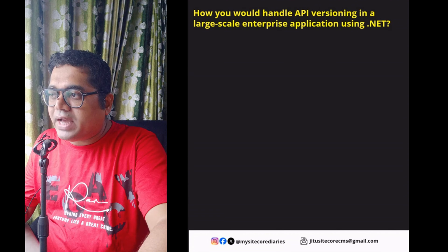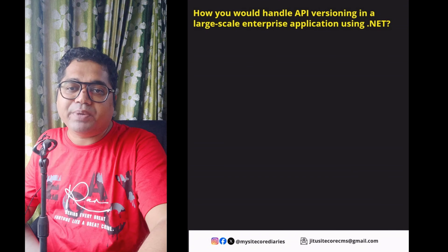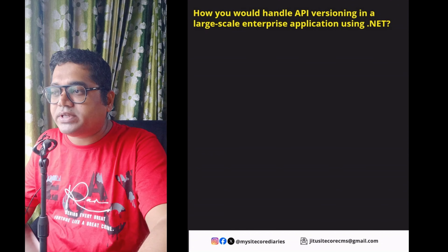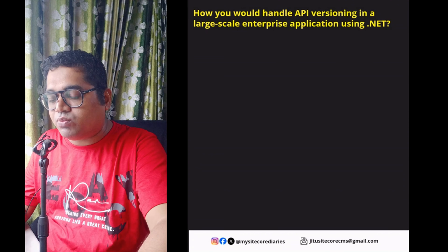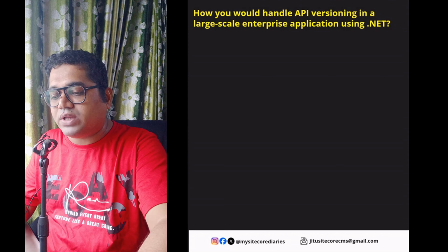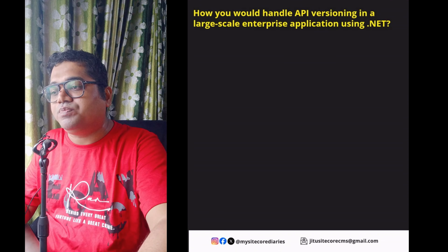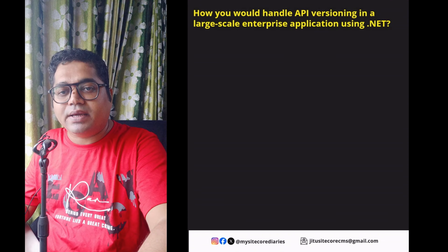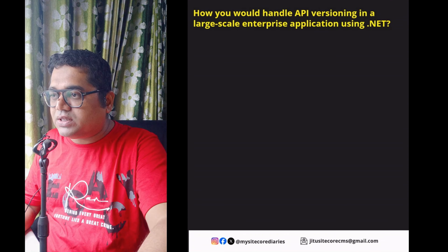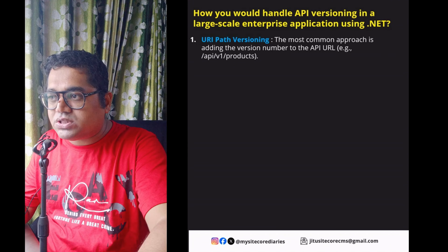Today's question is: how will you handle API versioning in a large-scale enterprise application using .NET? If you're developing APIs in your project and have multiple versions of those APIs, how will you handle backward compatibility? What are the ways you can handle API versioning? The first method is URL path versioning — the most common approach.